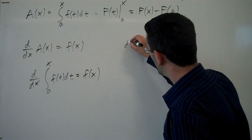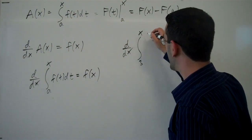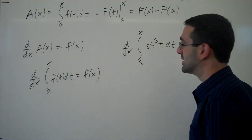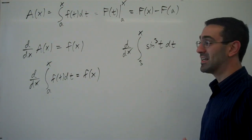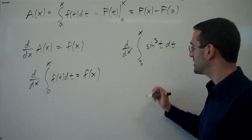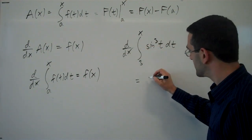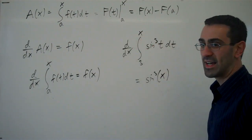So if I was wondering what the derivative of the integral from 3 to x of sine cubed t dt was, well, I have no idea what the antiderivative of this is, but it doesn't matter, because the fundamental theorem says that the derivative of this integral will just be that original sine cubed function evaluated at x.